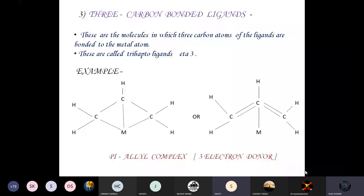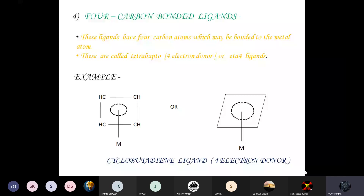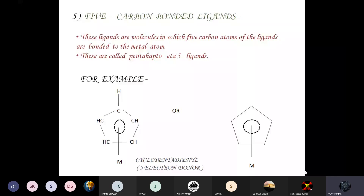The third type of ligand is three-carbon bonded ligands (η³), also known as trihapto ligands, in which three carbon atoms of the ligand are bonded to the metal atom. This includes the allyl group, known as pi-allyl ligands. The fourth type is four-carbon bonded ligands (η⁴), called tetrahapto ligands, of which cyclobutadiene is an example. The fifth type is five-carbon bonded ligands (η⁵), also called pentahapto ligands, in which five carbon atoms of the ligand are bonded to the metal atom; cyclopentadienyl is an example.